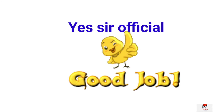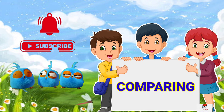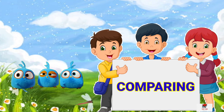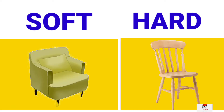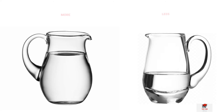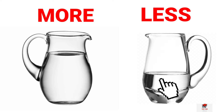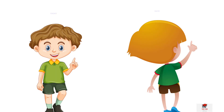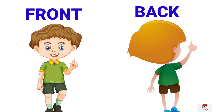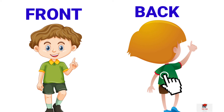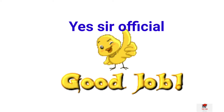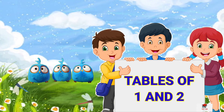Our next chapter is comparing. So now see. Sofa is soft and the chair is hard. Next, more and less. The water is more. The water is less. Next, front and back. The kid is at the front. And the back of the kid. Very good. Great. Very good. Great job.